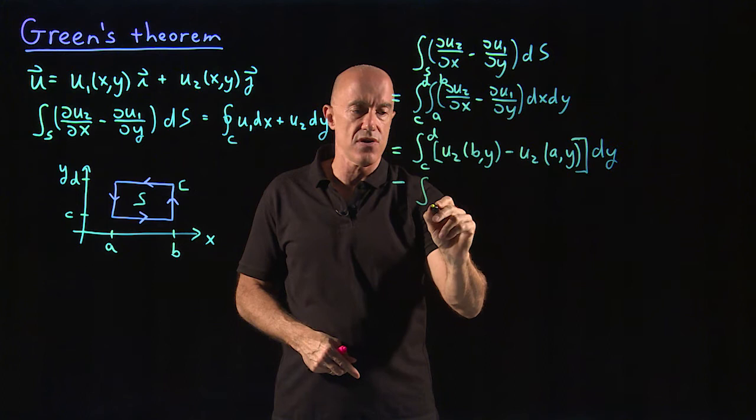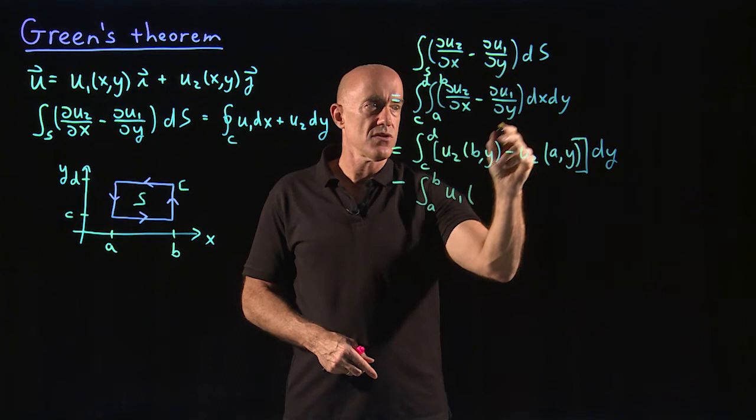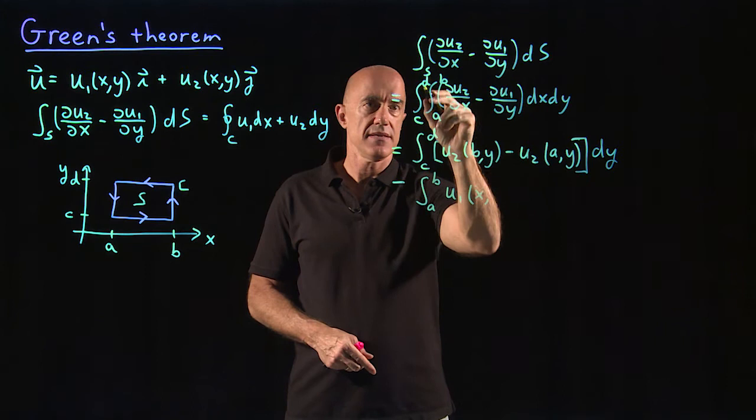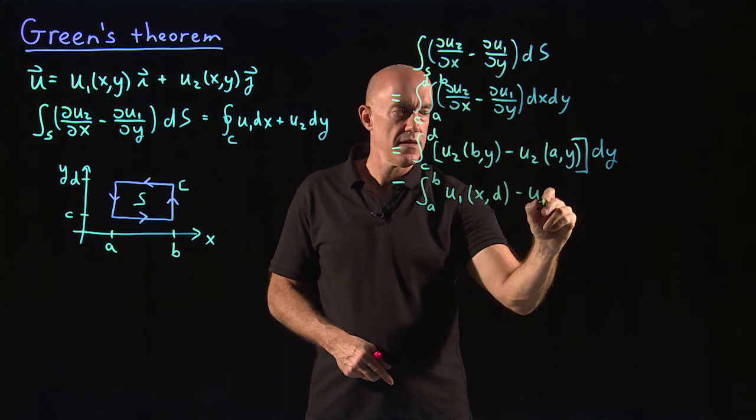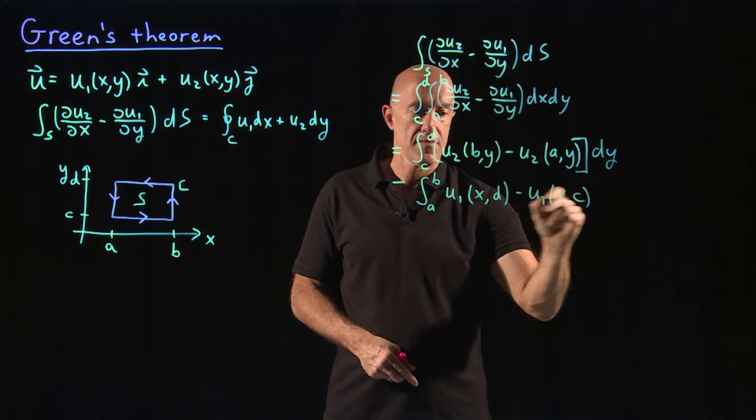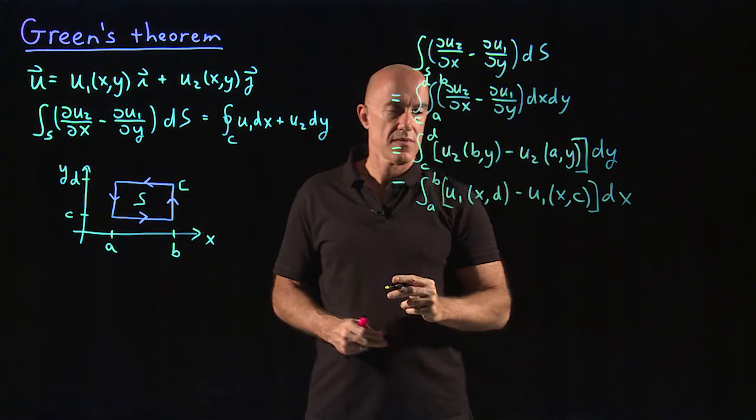Then we can reverse the order of integration and integrate the second term with respect to y. So we have an integral from a to b, and then we end up with u1 of x, and then y at the top limit will be d minus u1 of x, y at the bottom limit will be c, and this is dx.